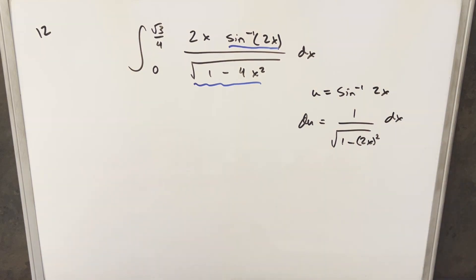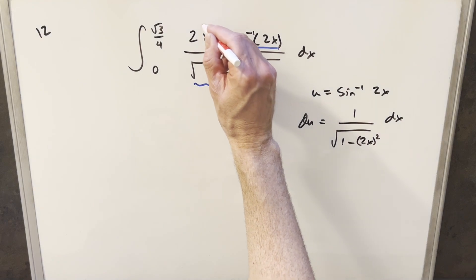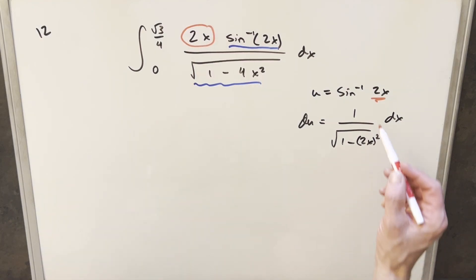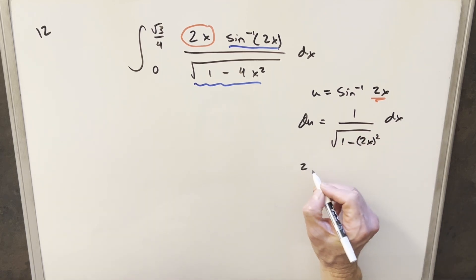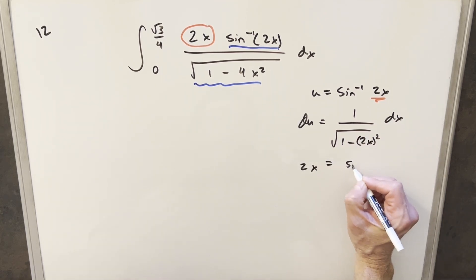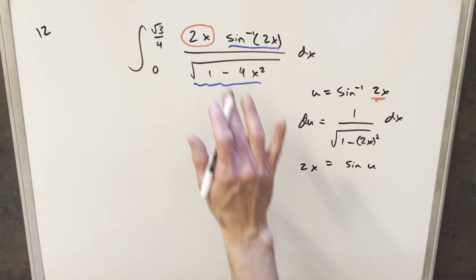Before we make the substitution, the only thing hanging out here is what do we do with this 2x? Well, we can get a value for that from right here. Because this is an inverse, I can actually write this as 2x equal to sine of u. And so we'll use that for the substitution.